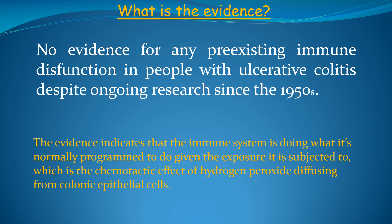The evidence strongly indicates that the immune system is normal in people with ulcerative colitis and is simply doing what it's programmed to do given the exposure it is subjected to, which is the chemotactic effect of hydrogen peroxide diffusing from colonic epithelial cells. Long-term inhibition of the immune system with immunosuppressive or immunomodulating agents can cause the cellular level of hydrogen peroxide to increase, worsening the underlying disease process and leading to medically refractory disease or colon cancer resulting in a total colectomy.